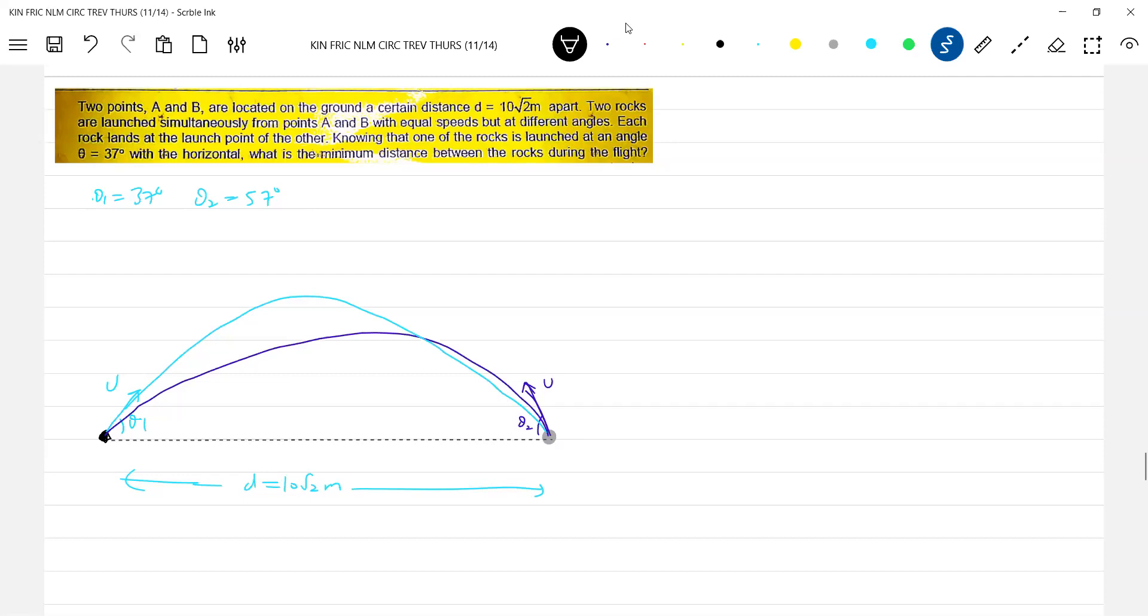Can we calculate the speed also? Speed of projection? Yes. We know range, no? So this range should be equal to, let me first get this. This range should be equal to